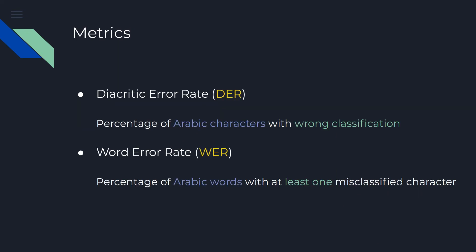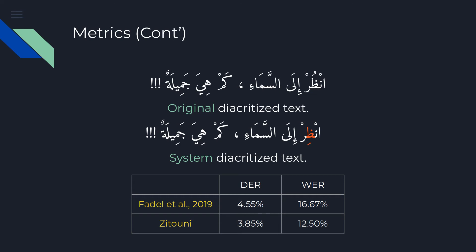The commonly used evaluation metrics for the diacritization problem are the diacritic error rate and word error rate. We use Fadel's definition where the diacritic error rate is the percentage of misclassified Arabic characters, whether the character has 0, 1, or 2 diacritics, and the word error rate is the percentage of Arabic words which have at least one misclassified Arabic character. Previous work used definitions from Zaytouni, but the problem with these definitions is that they take into consideration numbers and punctuations when counting characters and words, reducing the error rates when they should not be counted.